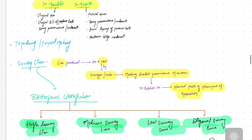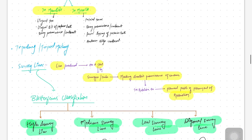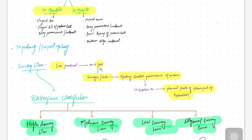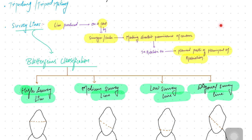Next is the survey line. The survey line is the line produced on the cast by the surveyor, marking the greatest prominence of the contour — the maximum contour position. This line is produced in relation to the planned path of placement of the restoration. So the survey line marks the greatest form of contour in relation to the planned path of placement of the restoration.